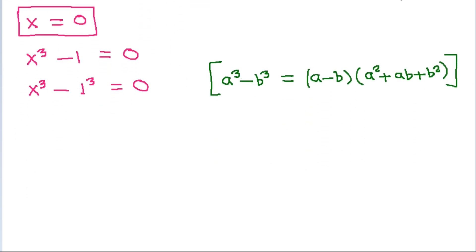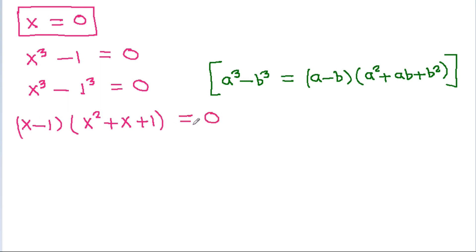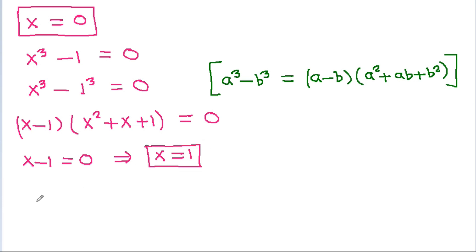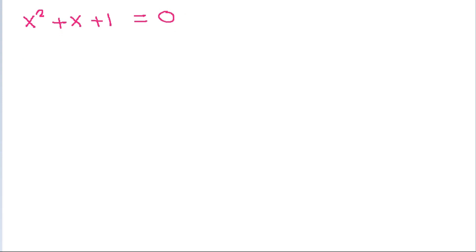So, x³ minus 1³ will be (x minus 1)(x² plus x plus 1) is equal to 0. Therefore, either x minus 1 is equal to 0, giving x equals 1, or x² plus x plus 1 is equal to 0, which is a quadratic equation.